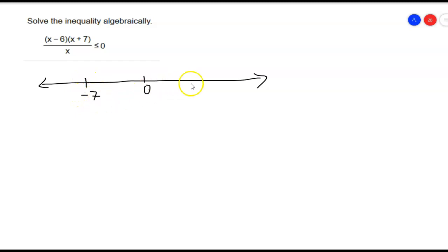That makes the top equal to 0. And then I also have a 6 over here, which also makes the top equal to 0. So why am I doing this? Because these are the only possible values that change this function from a negative y value to a positive y value.